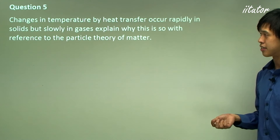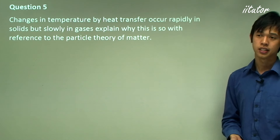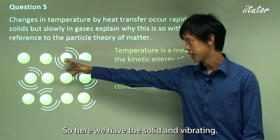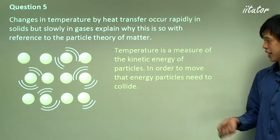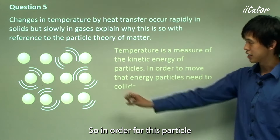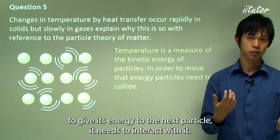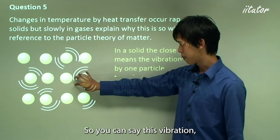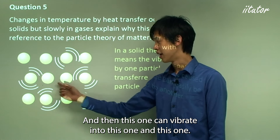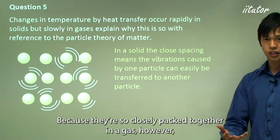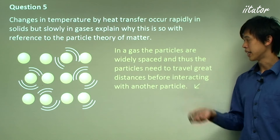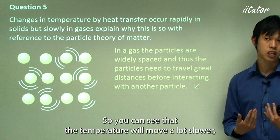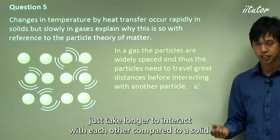Question five: why do changes in temperature by heat transfer occur rapidly in solids but slowly in gases? Temperature is related to the motion of particles — it's a measure of kinetic energy. In order to move that energy, particles need to collide. In a solid, the close spacing means vibrations caused by one particle are easily transferred to the next. In a gas, however, particles are widely spaced and must travel great distances before interacting with another particle, which obviously takes much more time.